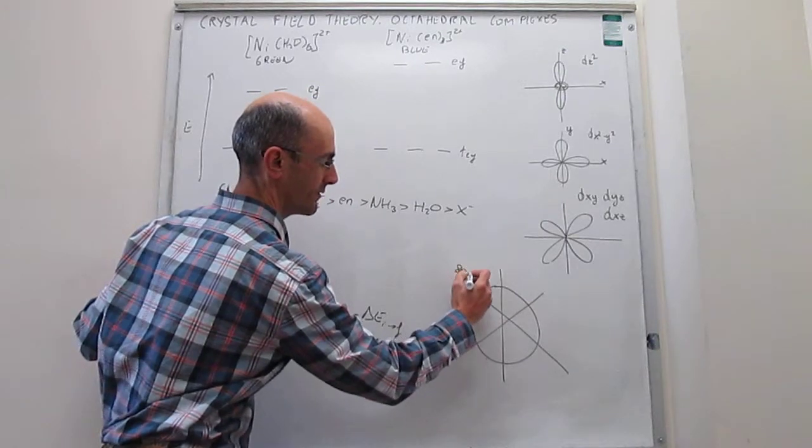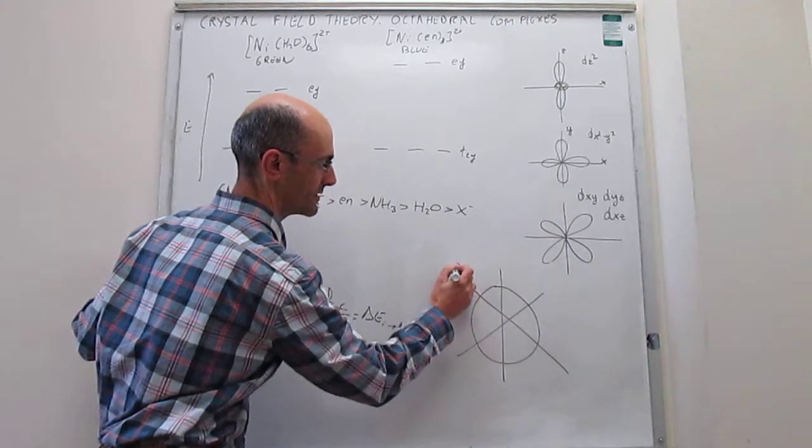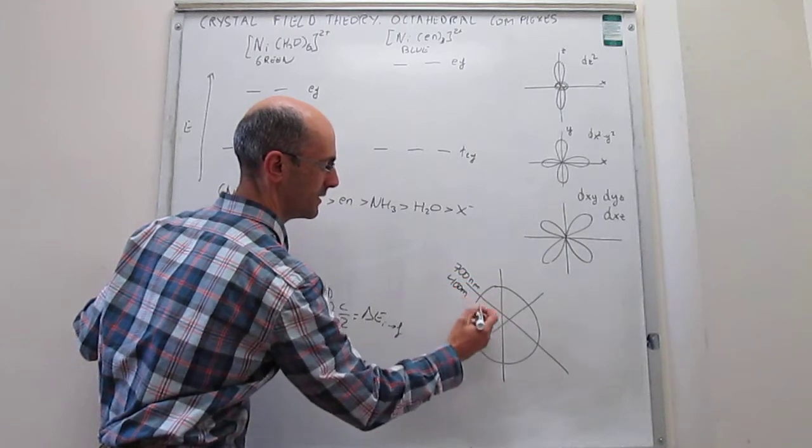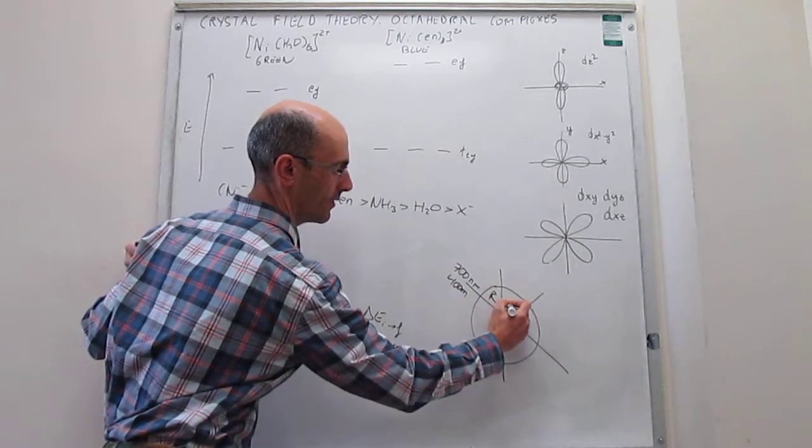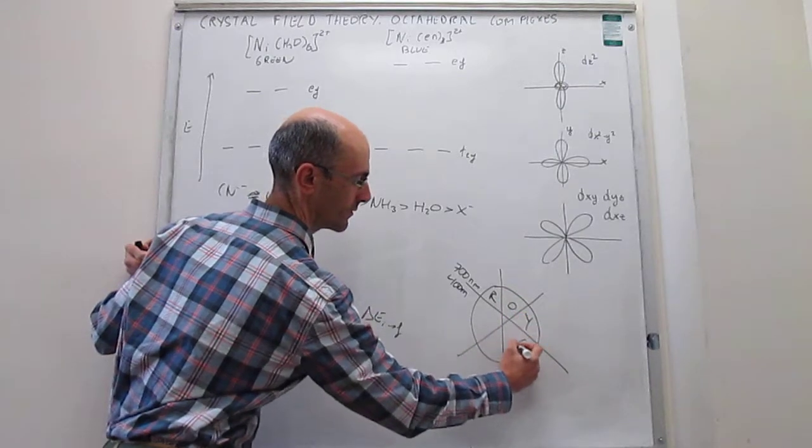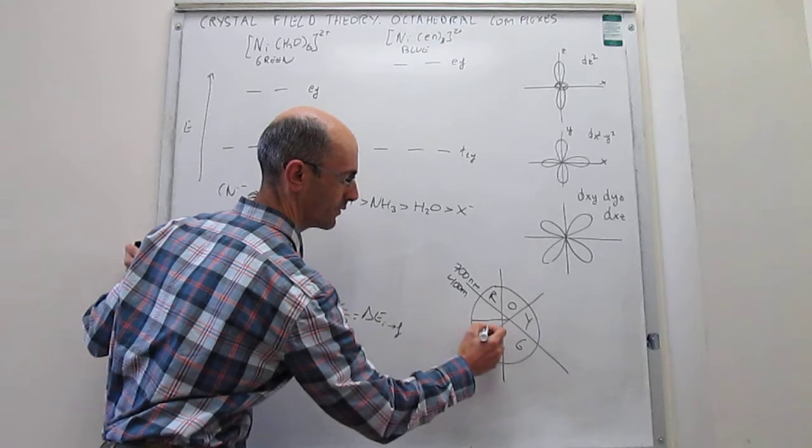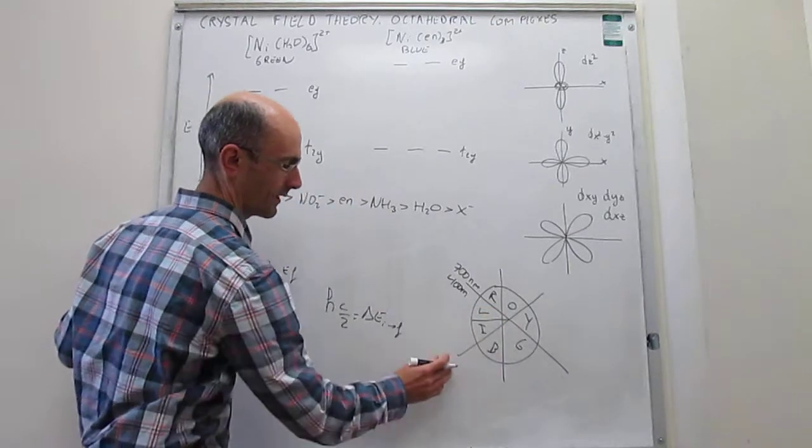If we start here, 700 nanometers to 400 nanometers. Here we will have red, orange, yellow, green, blue, and we can divide this cell into two, that would be indigo and violet.